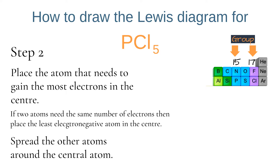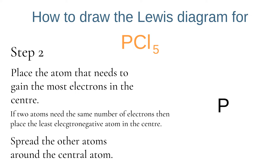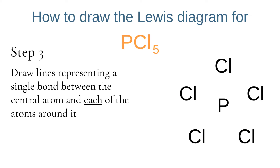The second step is to work out which atom needs to be placed in the centre of the Lewis diagram. This is usually the atom that needs to gain the most electrons to be stable, but if two atoms need the same number, place the least electronegative atom in the centre — that is the atom further down and further to the left of the periodic table. Phosphorus is in group 15, so it has 5 electrons in its valence shell and needs 3 more to be stable. Chlorine is in group 17, so it has 7 electrons and only needs 1 more. Therefore phosphorus needs the most electrons and we place it in the centre, spreading the remaining atoms evenly around it.